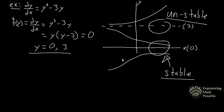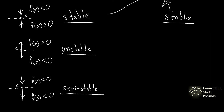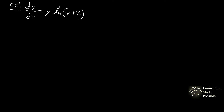To classify without a visual: if the function is negative above the critical point and positive below, it is stable. If the function is positive above and negative below, it is unstable. For semi-stable, the function is negative on both sides — sloping downward both above and below the critical point. A visual example shows both regions sloping downward toward the critical point, which is the semi-stable case.